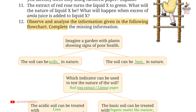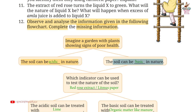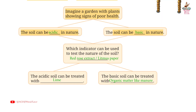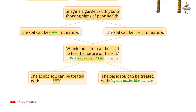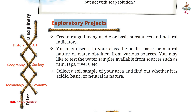Question 12: Observe and analyse the information given in the following flowchart and complete the missing information. Imagine a garden with plants showing signs of poor health. The soil can be acidic or basic in nature. Which indicator can be used to test the nature of the soil? Answer: Red rose extract or litmus paper. Acidic soil can be treated with lime. Basic soil can be treated with organic matter like manure.